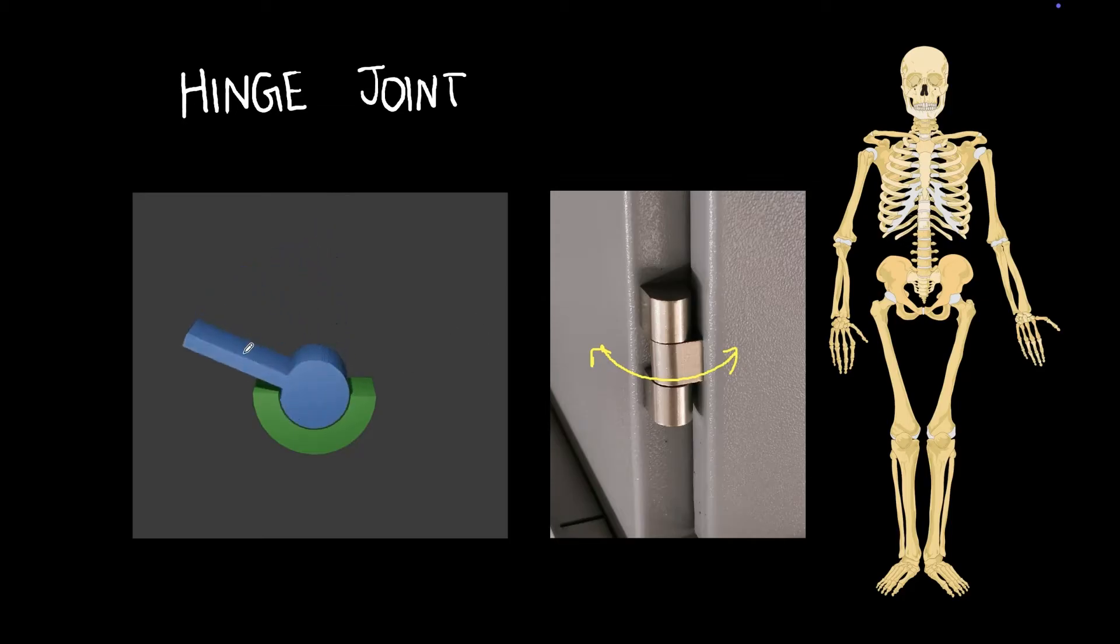So you can see that this is allowed to move in this direction and is allowed to move back in that direction. So there's rotation in a particular direction. We have bones in the body which are joined in a similar fashion. Let's look at one example.